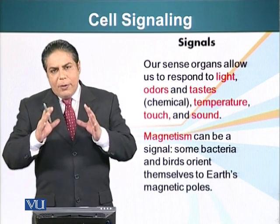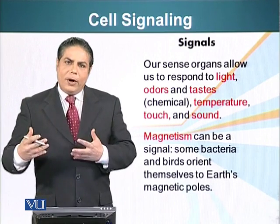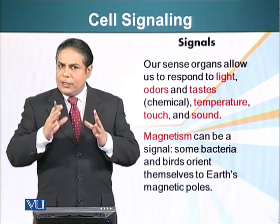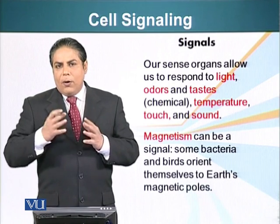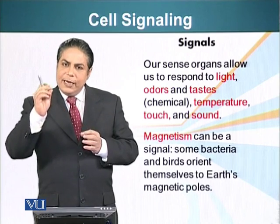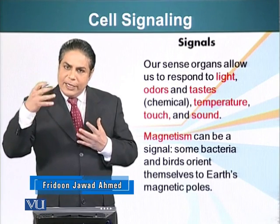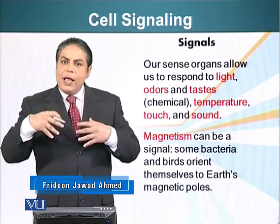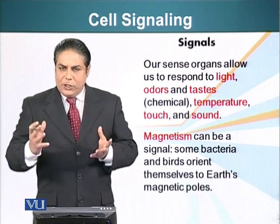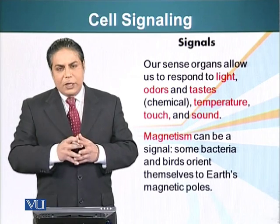Generally we think of signals as molecules released in the body or sensed in the environment, but it is not just molecules that serve as signals. You are able to see me because a photon of light hits your eye — that photon is the signaling entity which, when detected by cells, causes changes that allow your brain to form a picture. We will talk about how you are able to see in one of the subsequent modules.